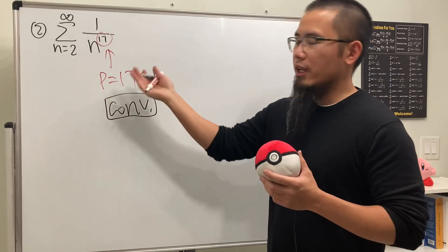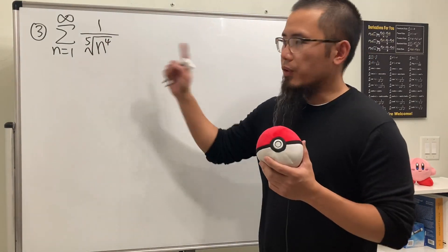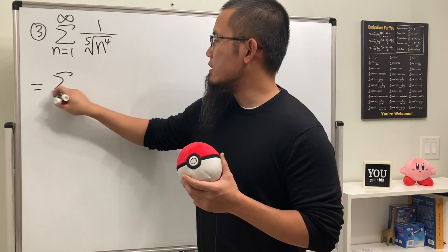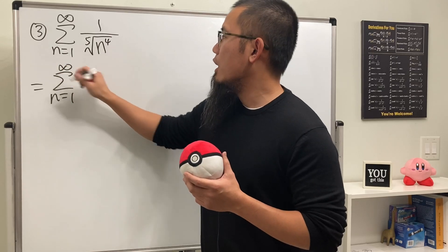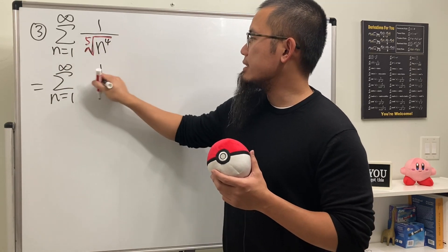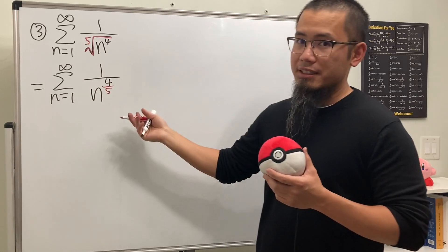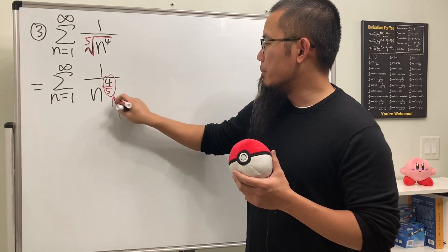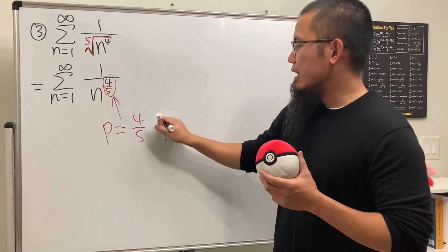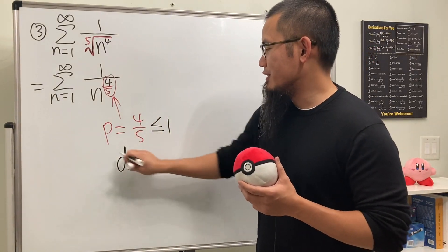Unfortunately we do not know what this converges to, but we just know that it does have a finite value. For the third one, we can write the radical into power form. With the fifth root, this is the same as the series as n goes from one to infinity of n to the four-over-five power. So p is four-fifths, and because this is less than or equal to one, this series diverges.